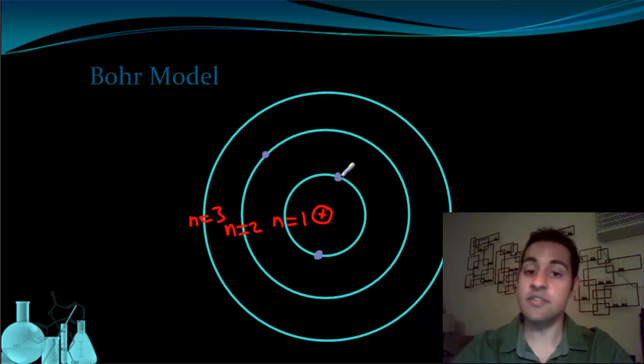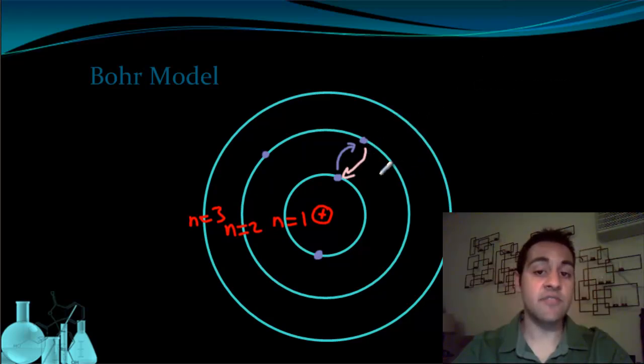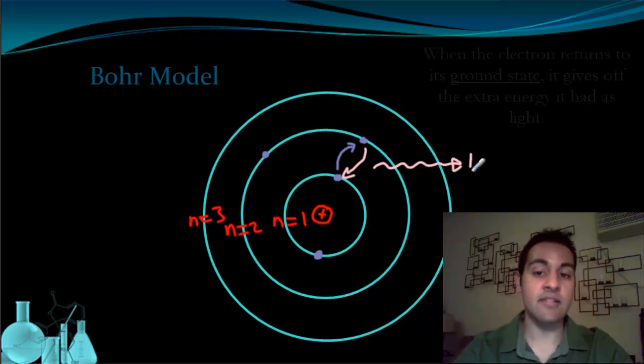So if this electron gets hit by a photon of light, that's energy. A photon of light is energy. If that photon that has the exact right amount of energy hits this electron, it will become excited from all that extra energy and jump up to the next level. Now in this excited state, the electron is unstable, and it will eventually fall back down. When it does fall back down, it's going to release all that energy as light.